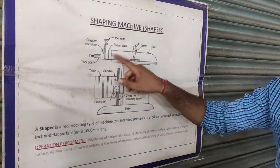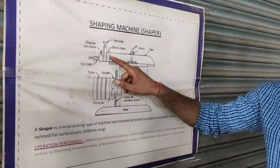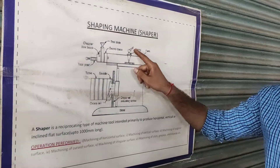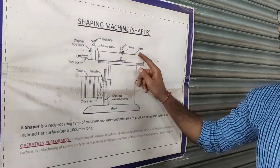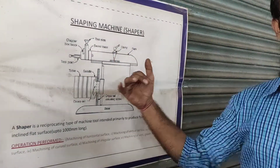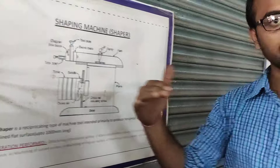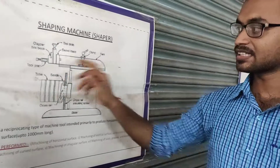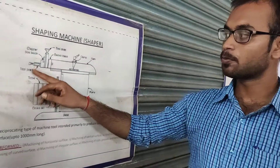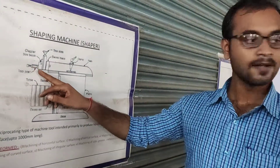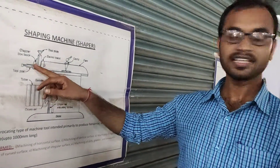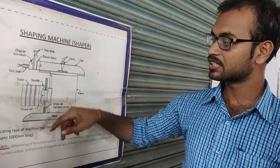Feeble base — total base is feeble base. So we can clamp this. Ram is moved. Ram is used to move with tool posts. Tool is moved.